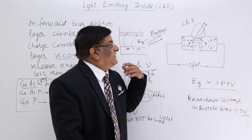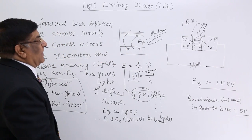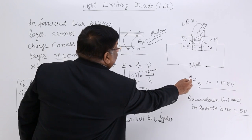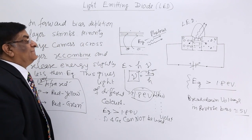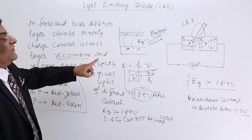So this is the case of LEDs. The voltage applied should be slightly more than the energy gap and recombination gives us.